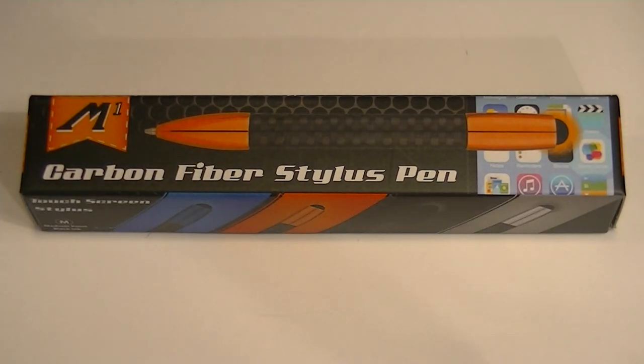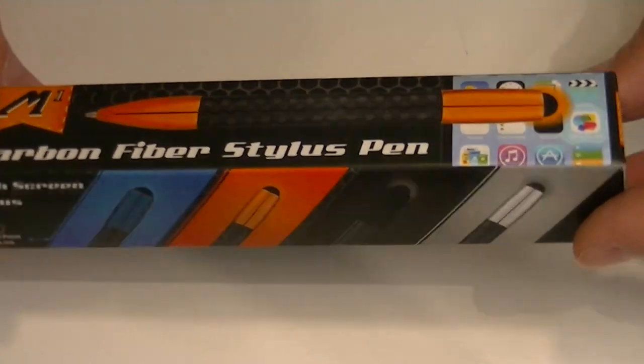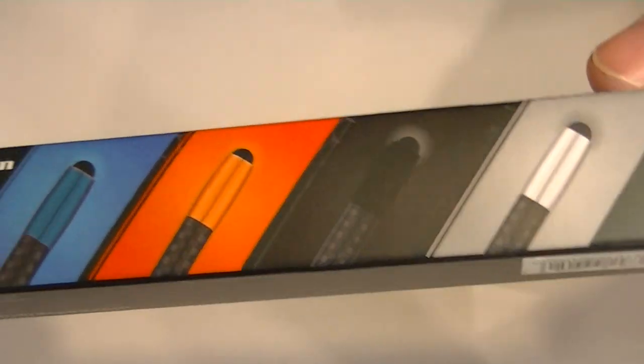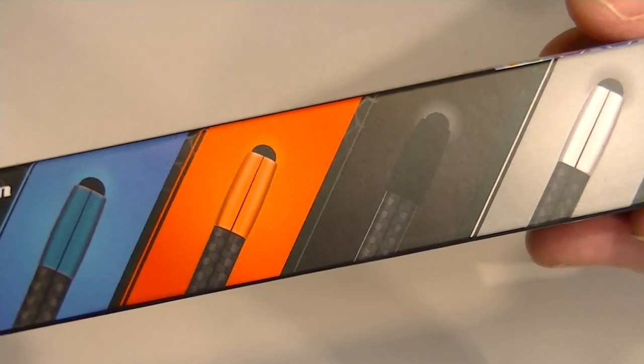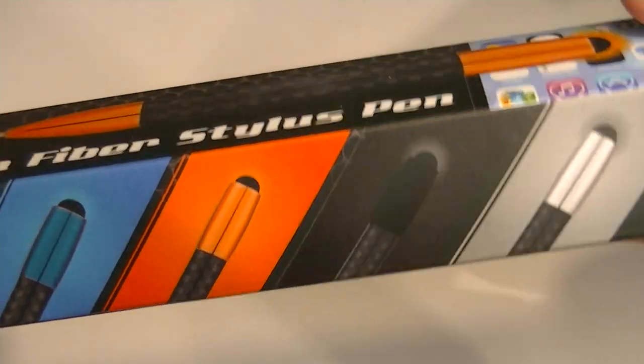This is the Monte Verde M1 Carbon Fiber Stylus Ballpoint Pen. It comes in just a cardboard box. You can see on the exterior information about the pens as well as the different colors that the pen is available in.